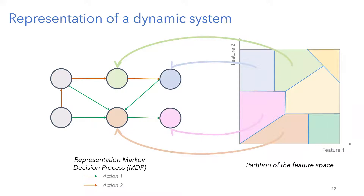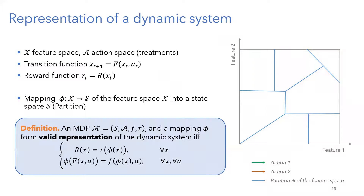Mathematically: suppose we have feature space X, action space A (e.g., possible treatments), a transition function F modeling the dynamic system, and a reward function. I want to construct a partition phi — the blue partition — obeying two conditions. Looking at the figure: for every two points in the same cluster, I want their rewards to be equal. Every two points in the same group should behave the same and therefore have the same reward. This is the first condition.